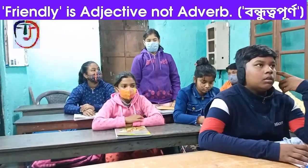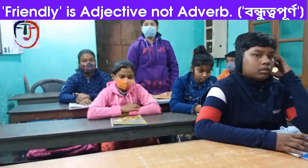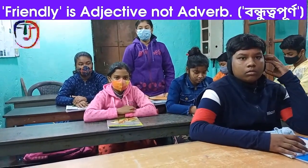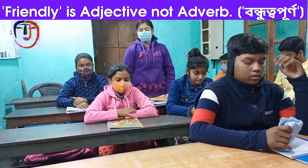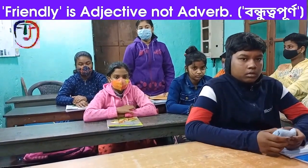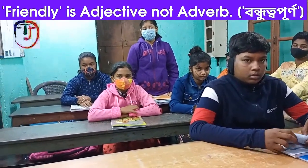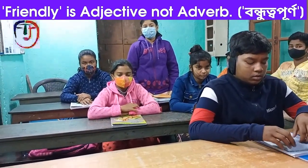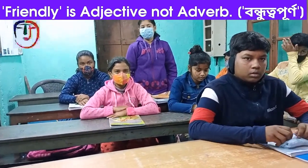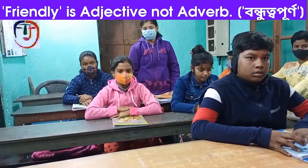Now, Saur, you tell another sentence with the word 'friendly.' Hurry up. He behaves me friendly. Again, you repeat. He behaves me friendly. Earlier you were telling 'He behaves with me friendly' — you have deleted 'with.' So I can't give you marks. Okay, take your seat.